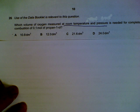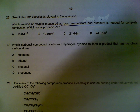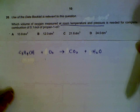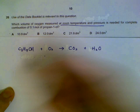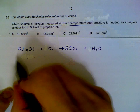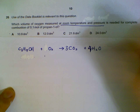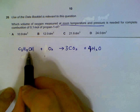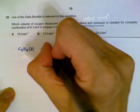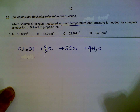Finding the volume of oxygen needed to combust propanol. We start with a balanced equation: propanol reacts with oxygen to give carbon dioxide and water. There are three carbons and eight hydrogens, giving four water molecules. That gives us 10 oxygens on the right side. There is already one oxygen in propanol, so we need nine-halves O₂.